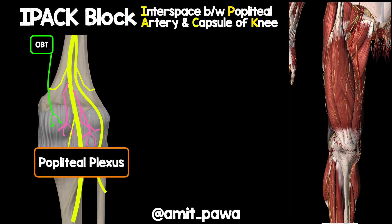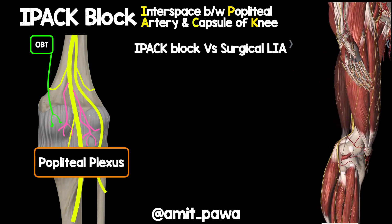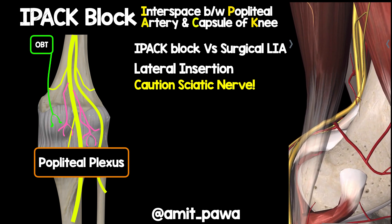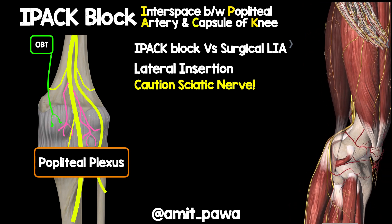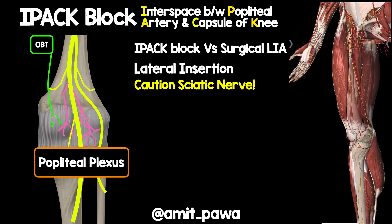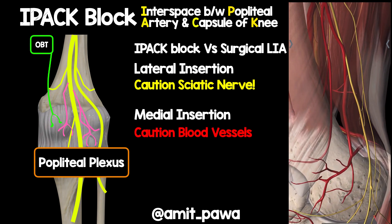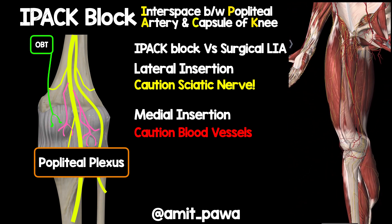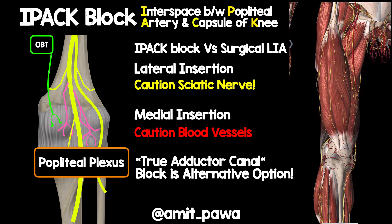What about the back of the knee? The aim is to take out the popliteal plexus. One approach is the IPAC block — placing local anesthetic in the interspace between the popliteal artery and the capsule of the knee. We can approach similarly to a popliteal sciatic nerve block but avoid the sciatic nerve, aiming close to the femur from the lateral aspect. Alternatively, approach from the medial aspect, targeting the same endpoint while being careful of the blood vessels. Thirdly, a true adductor canal block can be performed where the superficial femoral vessels pass through the adductor hiatus to become popliteal vessels — local anesthetic deposited there will track to the posterior aspect of the knee.